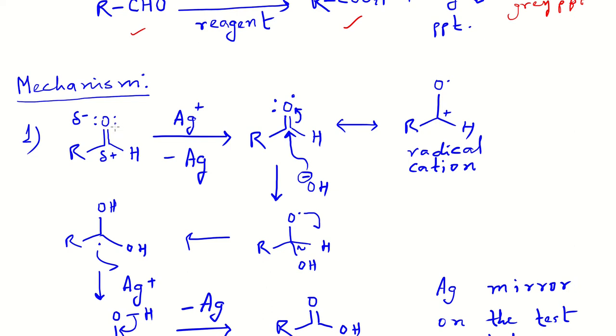This produces an intermediate which exists in equilibrium with its resonance form, which is basically a radical cation. Here is the radical center and this is the cationic center. Obviously two lone pairs are there, but I have not shown this. This radical cation is stabilized through resonance.